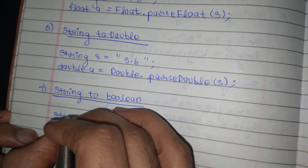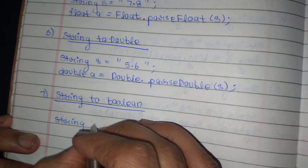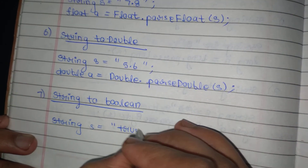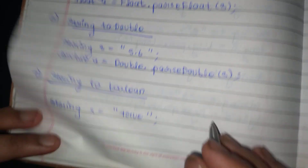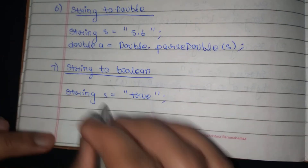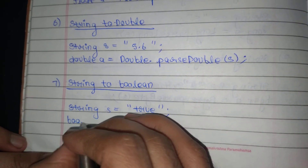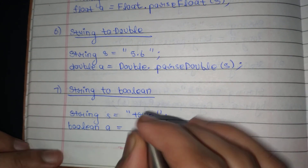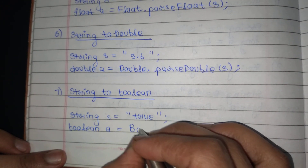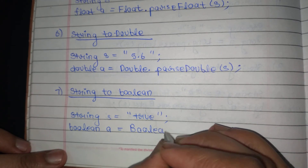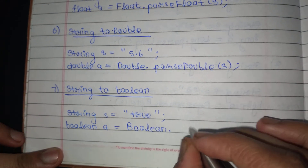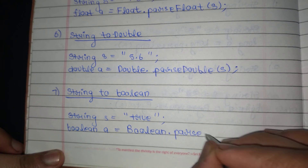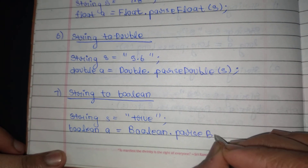Seventh: string to boolean. Suppose I am taking a variable string s equal to true — as boolean always takes only two values, true and false. Boolean a is equal to Boolean — with capital B, as it is the wrapper class — dot parseBoolean, and then s.